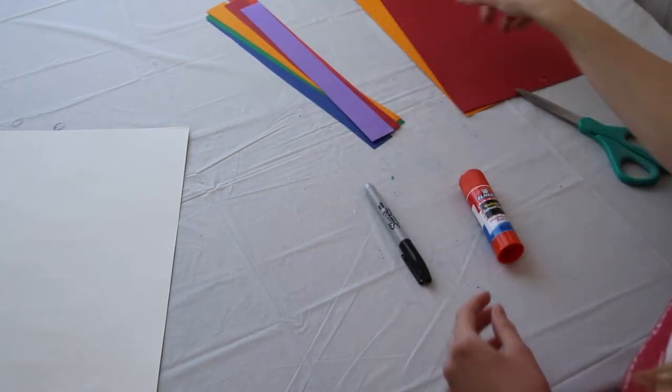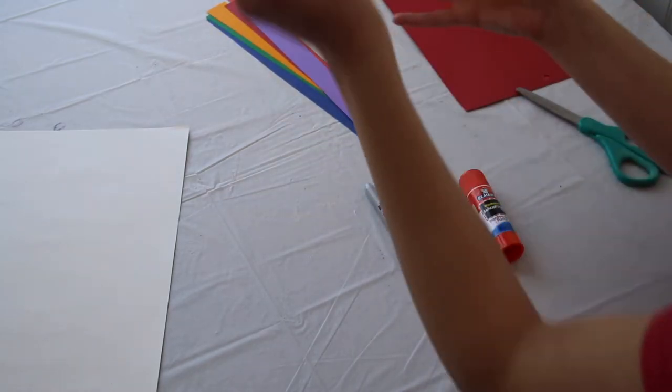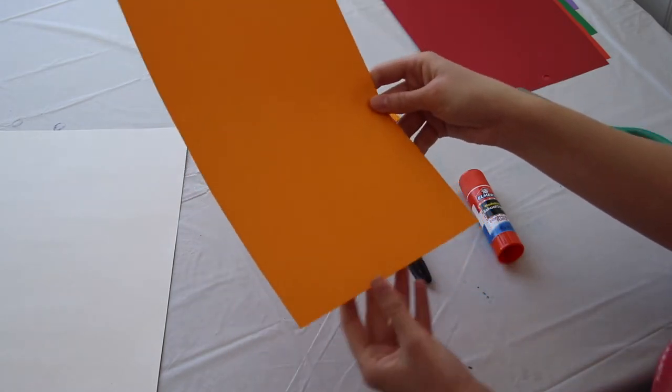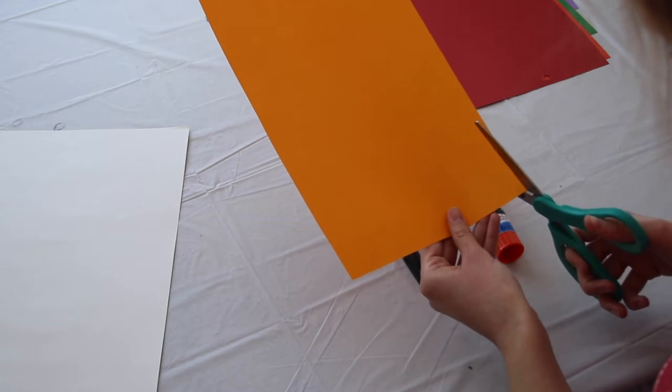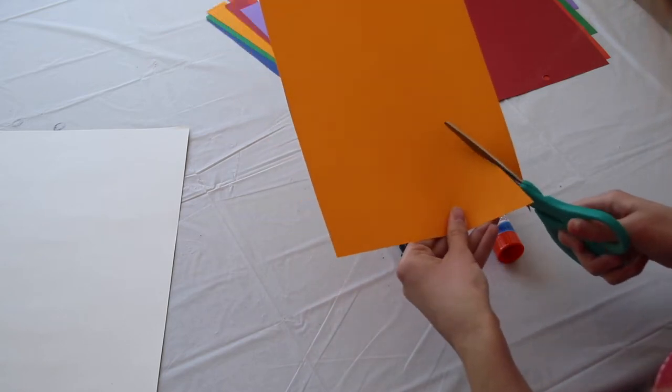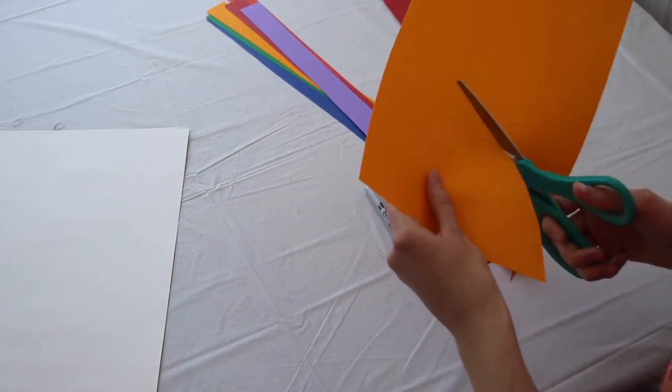So I'm going to put those off to the side and then I'm going to grab my yellow paper back. Now on the bottom of my yellow paper, I'm going to take my scissors and I'm going to cut out a semicircle or half a circle.